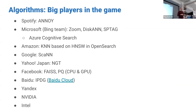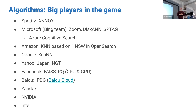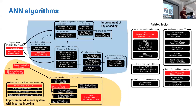In just the algorithm space there are many players: Spotify invented Annoy and open-sourced it; Microsoft works on algorithms for Bing's huge-scale vector search to save memory costs; Amazon, Google, Yahoo, Facebook invented FAISS; Baidu, Yandex, Nvidia, and Intel all competed in the recent billion-scale benchmark. There are many algorithm classes — graph-based, product quantization, inverted file, and more — representing a large body of papers to explore.